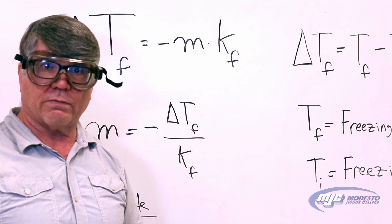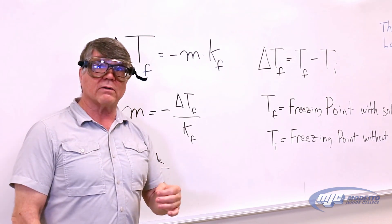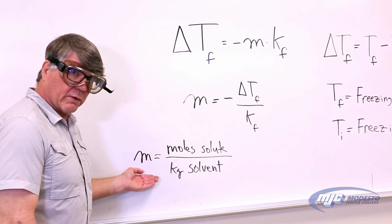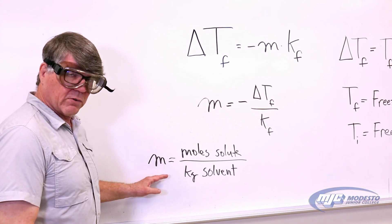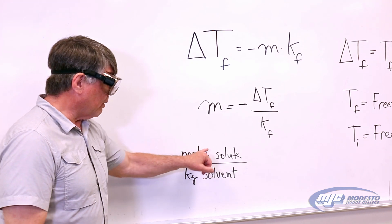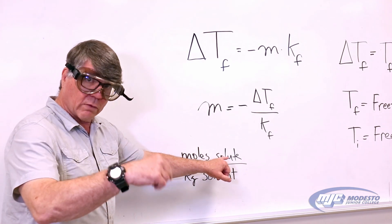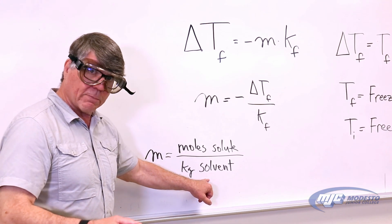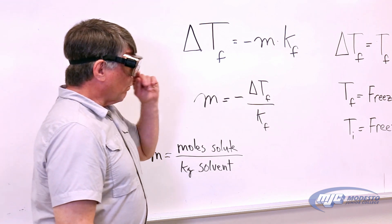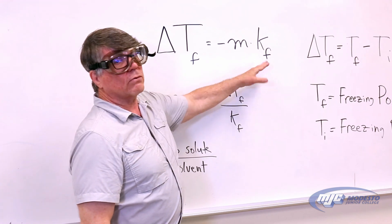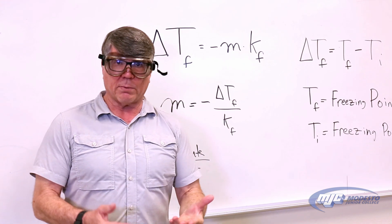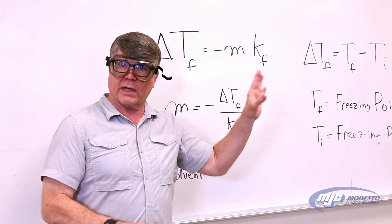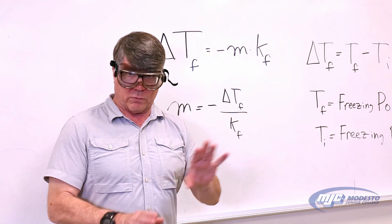M is a unit of concentration called molality — not molarity, but molality. This is an important definition: molality is moles of the solute, the thing you're dissolving in there, divided by kilograms of the solvent, the thing you're dissolving it in. And the Kf — this is just a constant, and it depends upon what the solvent is. I give you the value for Kf in the lab, so you'll know what that is.